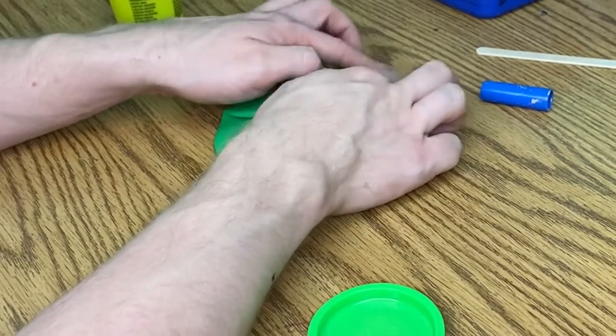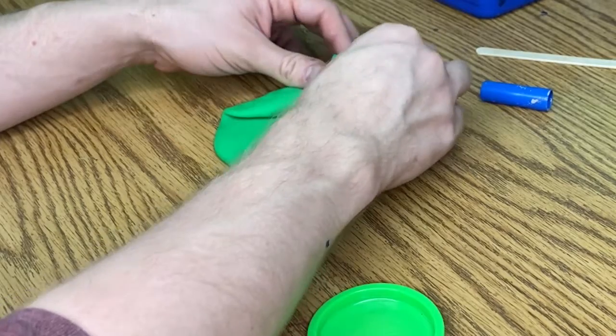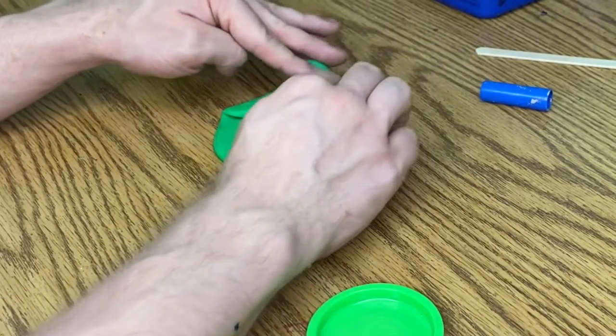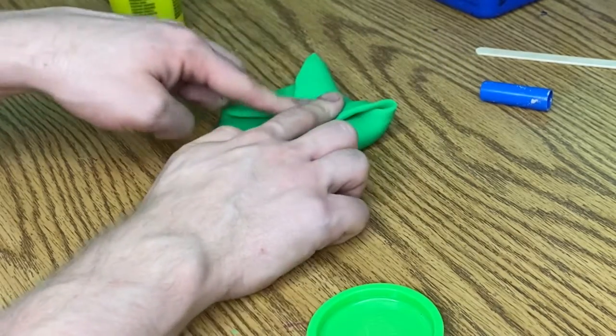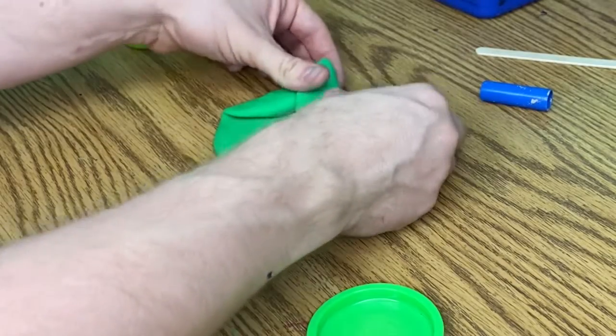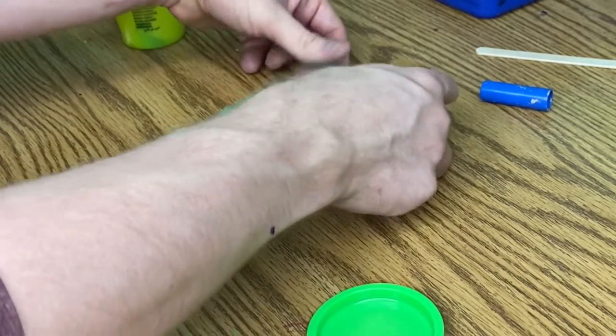All right. So we have the wings, but now we need the head. So we're going to pull the top down. And this is going to be the face of our owl. Go ahead and push that down, and then give me a thumbs up.